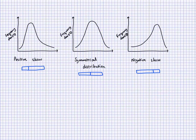So if the median is quite close to the upper quartile, this suggests negative skew. If the median is quite close to the lower quartile, this suggests positive skew. And if it's around the middle, then it's going to be quite symmetrical.